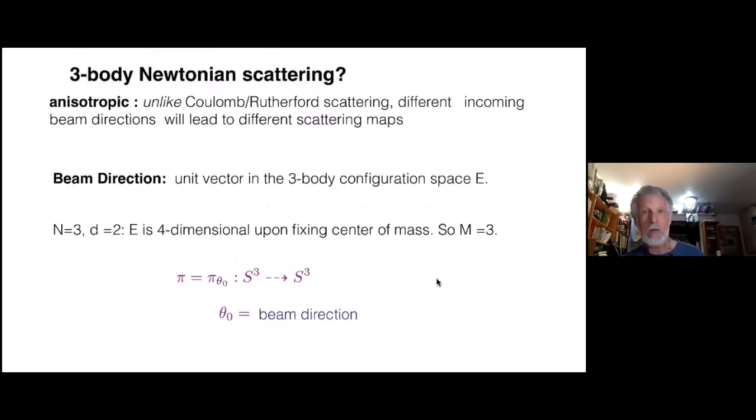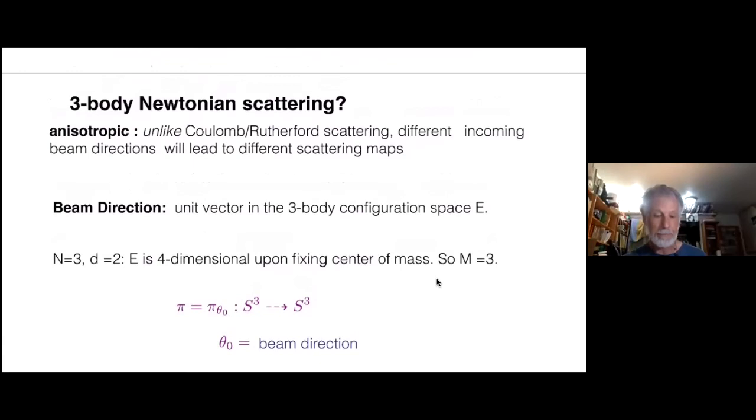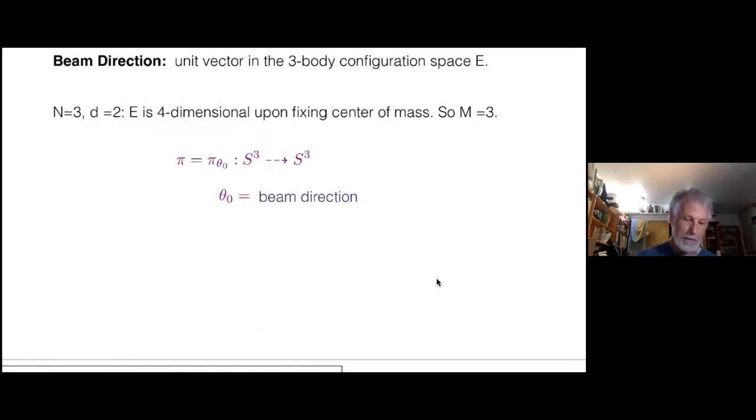So I've got about five to ten minutes left. I didn't get very far. I should have just skipped central configurations, but here we go. So now I want to do three-body Newtonian scattering. And the big difference is it's anisotropic. Unlike Coulomb or Rutherford, different incoming beam directions will lead to different scattering maps. And what's a beam direction? It's a unit vector in the configuration space.